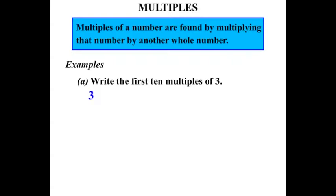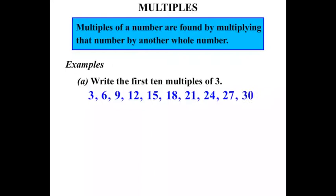3 is our first multiple of 3 — 3 times 1 is 3. Then 3 times 2 is 6. The next one is 9, so we're going up by 3's. Then 12, 15, 18, 21, 24, 27, and 30. That's the 10th multiple of 3. 3 tens are 30 — there is a connection there. The first 10 multiples of 3 are done.